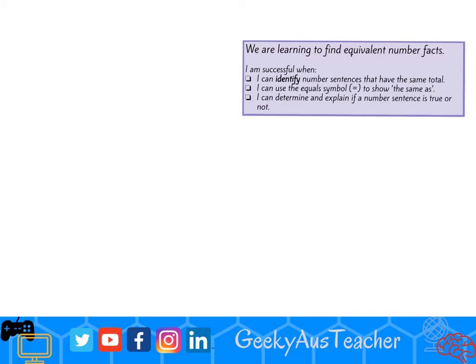If I'm trying to find number sentences that have the same total, I might have 5 times 3 and 3 times 5. I can say that 5 times 3 equals 15, and 3 times 5 equals 15.